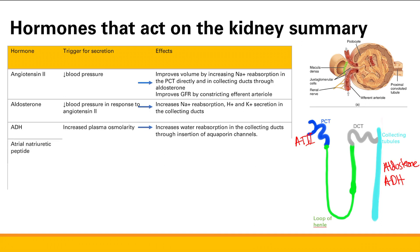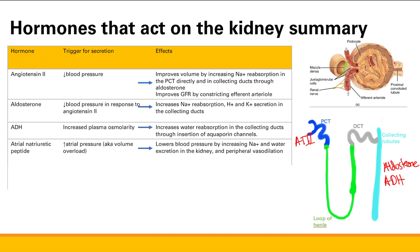Next is atrial natriuretic peptide. We talked about it a lot in the cardiac section. What is the trigger for secretion here? The trigger is increased atrial pressure — basically it tells you that you have volume overload, too much fluid in your vessels. How is it going to act? It's going to do two things: it's going to increase natriuresis and diuresis in the kidney — make you pee more and get rid of sodium — and then you're going to get peripheral vasodilation. It's very much the opposite of angiotensin 2. Angiotensin 2 increases your blood pressure; atrial natriuretic peptide decreases your blood pressure and decreases volume overload.